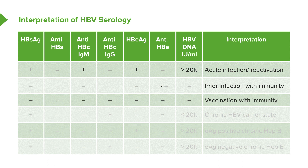For vaccination with immunity, you will still find anti-HBs positive — that represents successful vaccination.